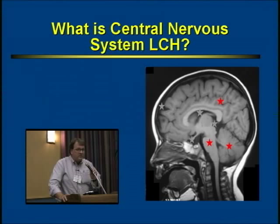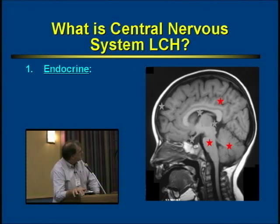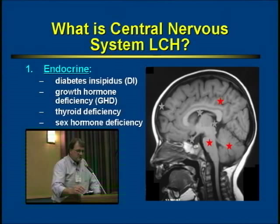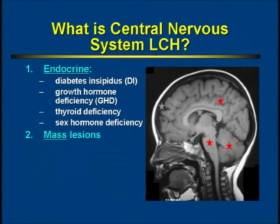What is central nervous system LCH? Well, there are really three different types. The first is the endocrine complications of LCH that involve the central nervous system. They include a list of disorders that are endocrinologic in nature: diabetes insipidus, growth hormone deficiency, thyroid deficiency, and various sex hormone deficiencies. Vaisantz is going to talk more about this next in terms of the long-term follow-up of patients as well.